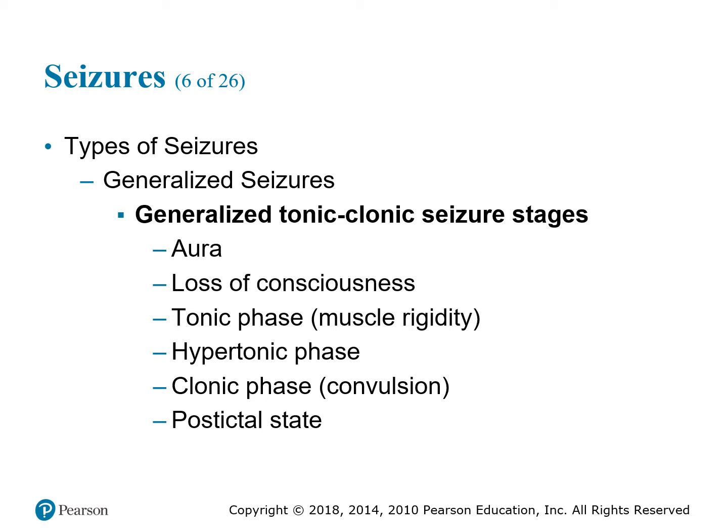After the aura, the patient will lose consciousness and go into the tonic phase, where they have muscle rigidity and get stiff. Then the hypertonic phase where you might see arching in the back, followed by the clonic phase with actual convulsions or spastic movement. All of this ends in the postictal state.